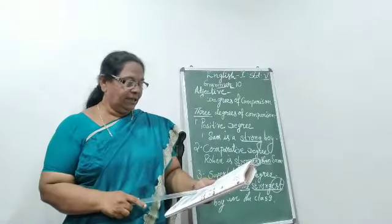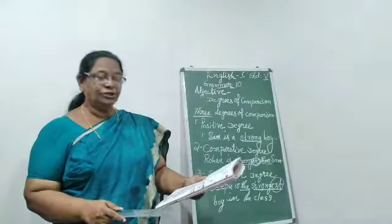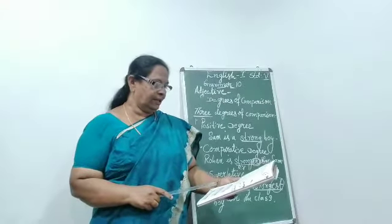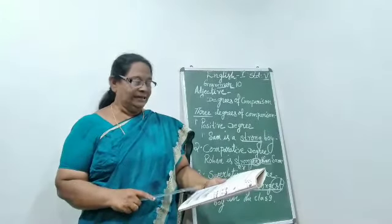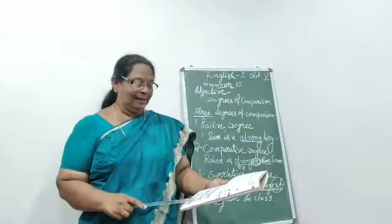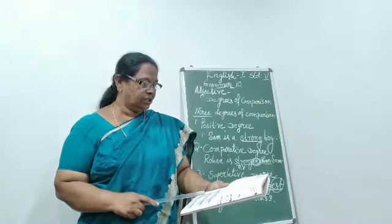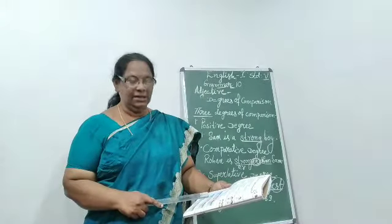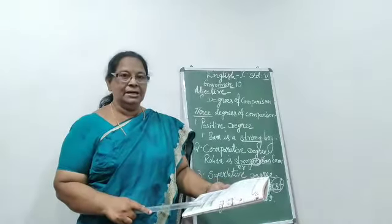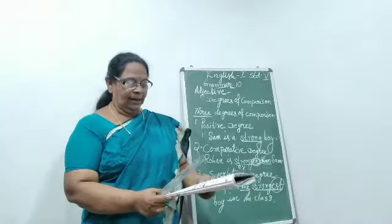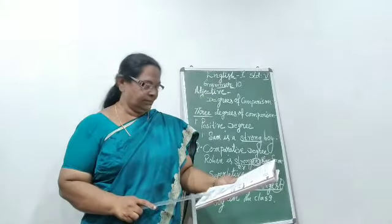Second rule: adjectives ending in 'e' — add only 'r' to form the comparative and 'st' to form the superlative. See the examples: nice, nicer, nicest. Late, later, latest. Because the last letter is already 'e', for the comparative we add only 'r', and for the superlative we add only 'st'. Is it clear?